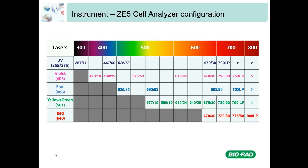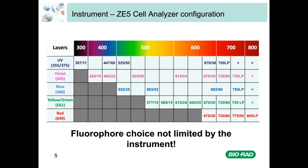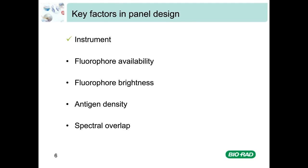27 colors will get us a long way. At a glance we can see that there are five detectors on the UV laser line, seven colors on the violet laser line, four colors on the blue laser, seven colors on the yellow-green and four colors on the red. So it's quite easy to conclude that our fluorophore choices for this panel design are not going to be limited by the ZE5. After establishing that the instrument configuration will not give us any initial limitations, we will move on to look at the fluorophore availability.